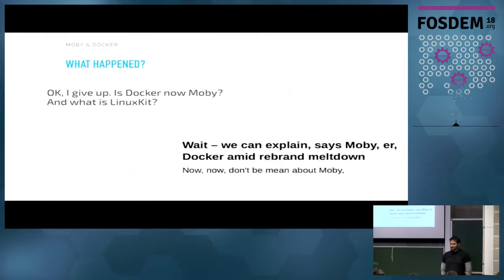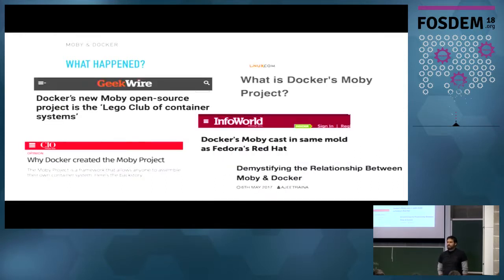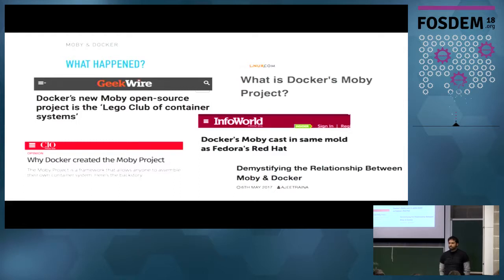Some people didn't quite understand what was going on. Luckily, we did spend a lot of time briefing people, talking to maintainers, talking to influential people in the community to help them understand what was happening. The majority of people did get what we were trying to do. One of the benefits of having a company behind an open source project is we can take the time to go out and brief people from the press, people from industry, people writing journal articles. Docker also runs a captain's program — we were able to brief those people so when they give talks and explain things, they also understand what we were trying to do.